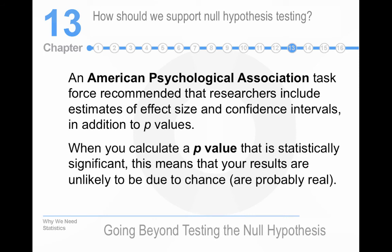The American Psychological Association recommends researchers should include estimates of effect size and confidence intervals in addition to p-values. So, the p-value is, how likely are your results, essentially?